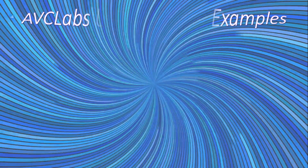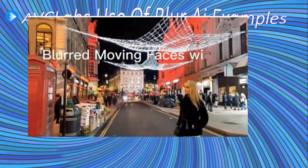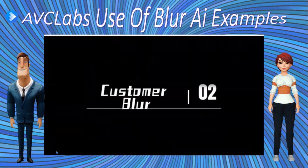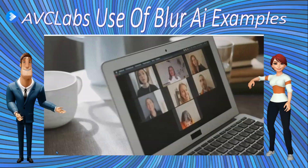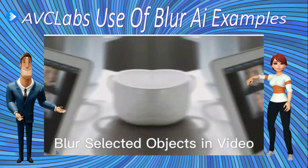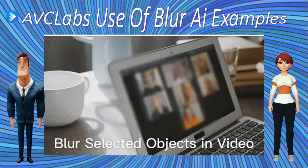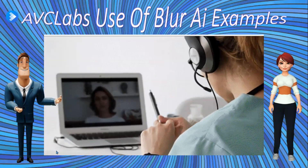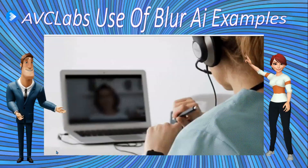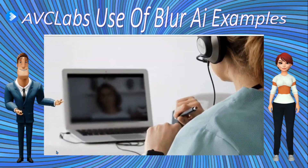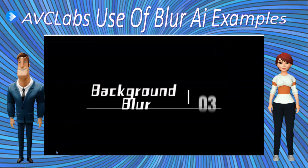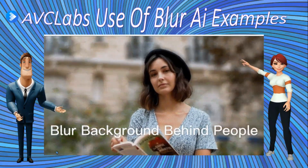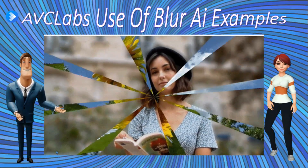Now we're going to take a look at how the AI automated solutions for face and video blur work. Let's see it in action. AVC Labs Blur and Face Blur is an easy-to-use video blur app. It allows you to protect privacy by blurring the background, foreground, faces, or any other objects in your videos. With AI and deep learning techniques,